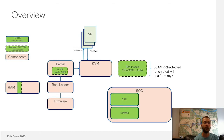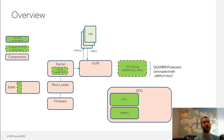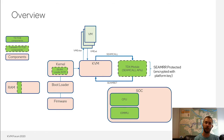At boot time, the kernel invokes the SEAM loader ACM, which loads the TDX module into memory protected by the SEAM RR, and also does some configuration of the TDX module during boot. Then at runtime, KVM executes SEAM call to invoke APIs provided by the TDX module, and the TDX module executes SEAM ret to return control back to KVM.